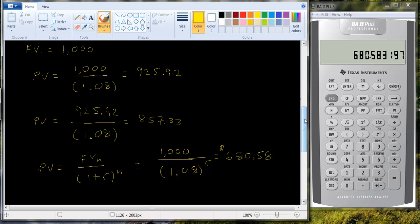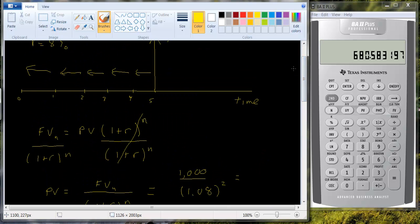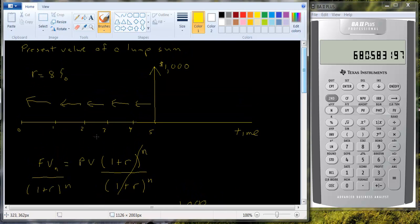So if we brought this money all the way back to the present, so we took this thousand and we brought it all the way back here, it would be worth six eighty fifty eight. What does that mean?